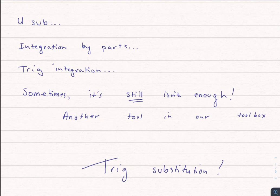We've got a couple of tools under our belt. We know how to do u-substitution, we know how to integrate by parts, and we know how to handle trig integration for things like sine squared times cosine squared. But sometimes we still need more. One other tool we're going to have is trig substitution. The question is: when are we going to use trig substitution?